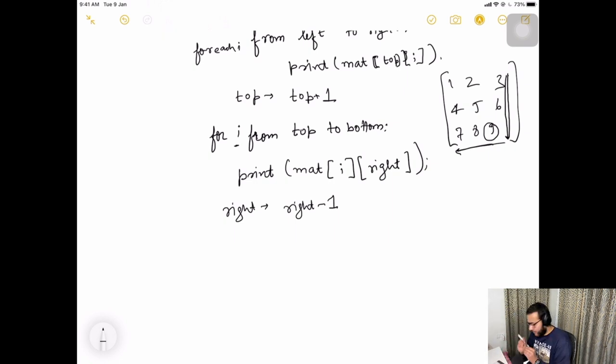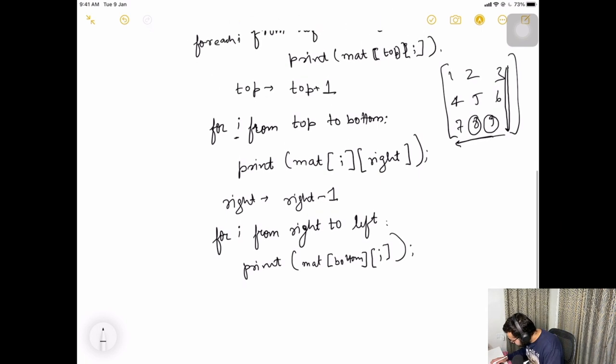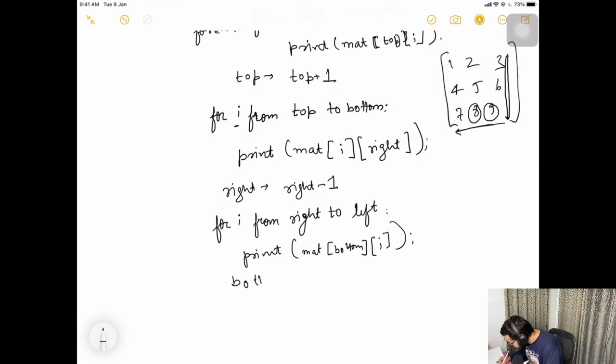Right cannot go plus one, right has to come behind so that if you do plus one, then again, the loops can go to seven, eight, nine and ahead. So we have to come back. So right goes to right minus one. And now let's print from right to left. So now right will become this value. So for I from right to left, print. Now the row is bottom and column is changing, which is denoted by I. So here we have, in this way, so one, two, three, six, nine, eight, seven is printed. Now we already have printed the bottom row. So we have to again not print that bottom row again. So what do we do? Bottom is already the bottom most row, right? So we have to do bottom minus one. So we do bottom goes to bottom minus one.